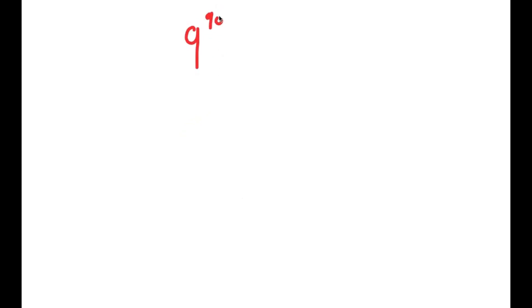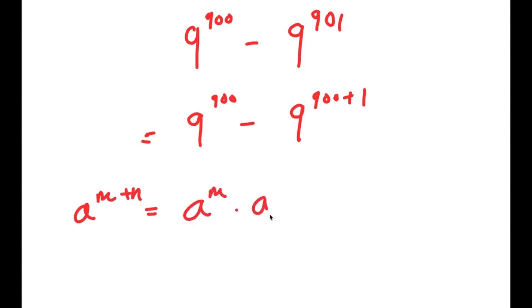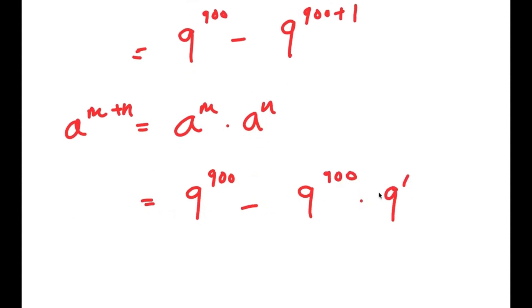Alright, so in this video I'm going to solve the problem 9 to the power of 900 minus 9 to the power of 901. To solve this, I'm going to first rewrite this as 9 to the power of 900 minus 9 to the power of 900 plus 1. Using the property that a to the power of m plus n equals a to the power of m times a to the power of n, I now get 9 to the power of 900 minus 9 to the power of 900 times 9 to the power of 1.